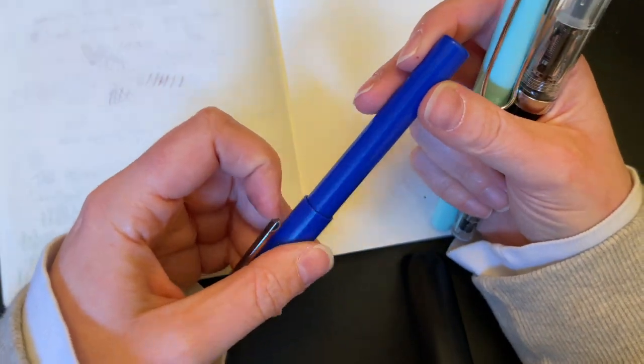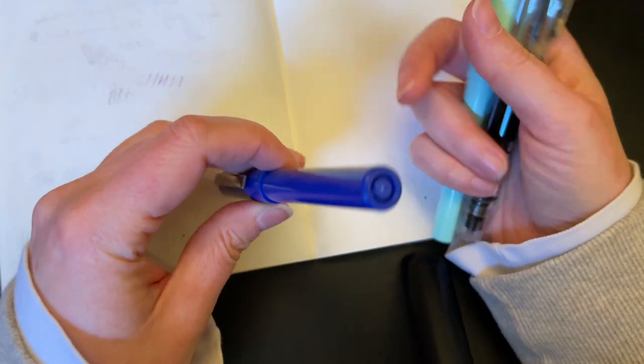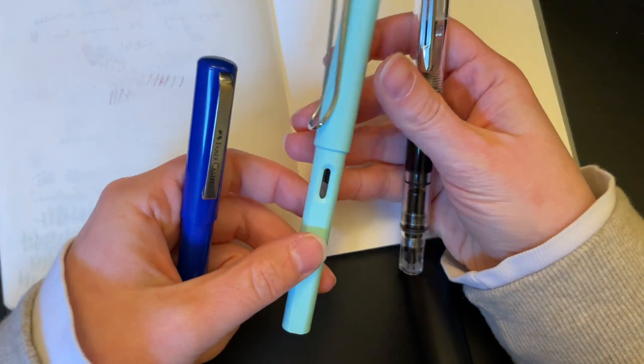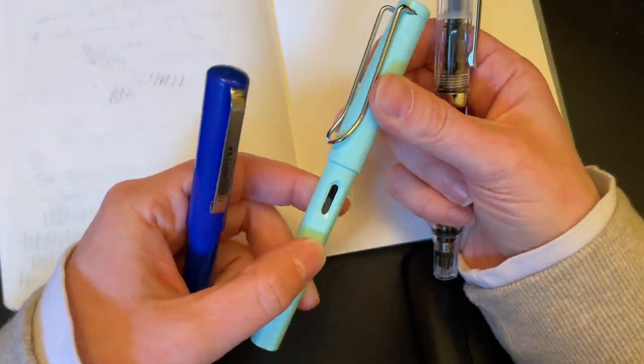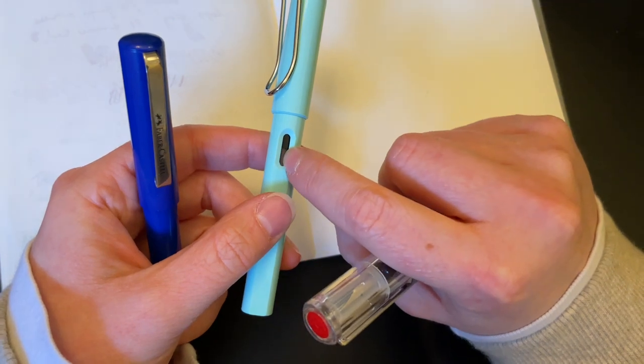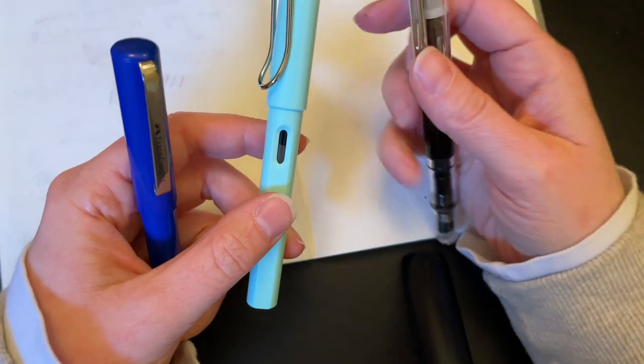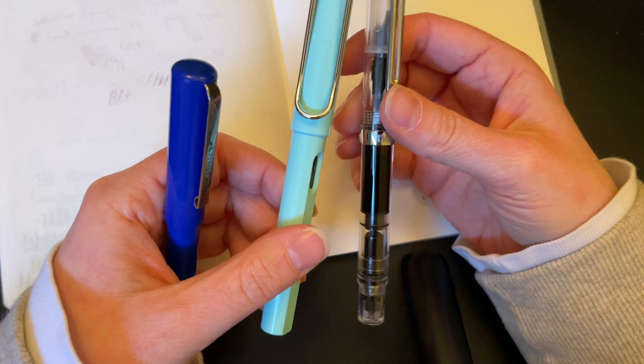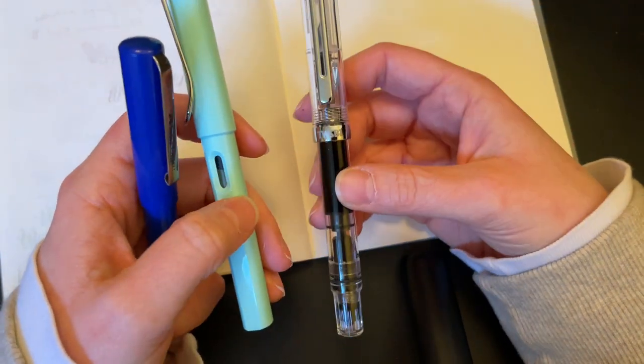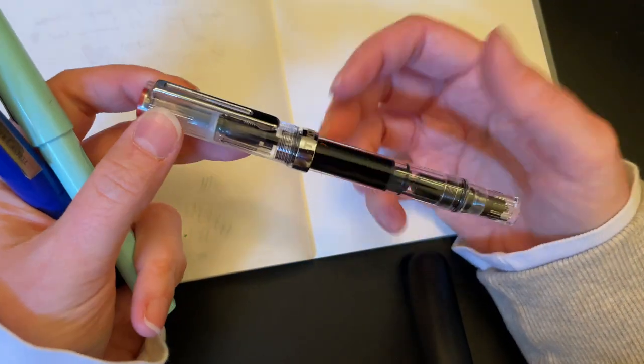The Faber-Castell, you can certainly tell, is very cheap. It is meant to almost be disposable. The Lamy Safari, you do have to factor in you're going to have to buy a converter. It does come with some cartridges, but you do have to factor that in as well.